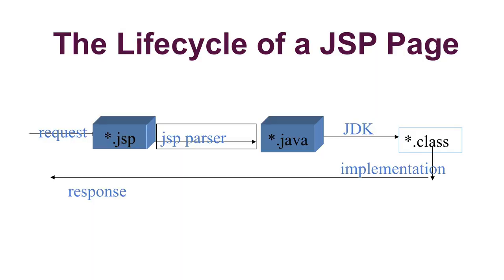First, let's look at the Life Cycle of a JSP Page. When we execute a JSP program or send a request to the server, the JSP Parser will convert our JSP program — the dot JSP file — into a dot class program, and finally it will respond accordingly. This is, broadly speaking, the Life Cycle of the JSP Page.